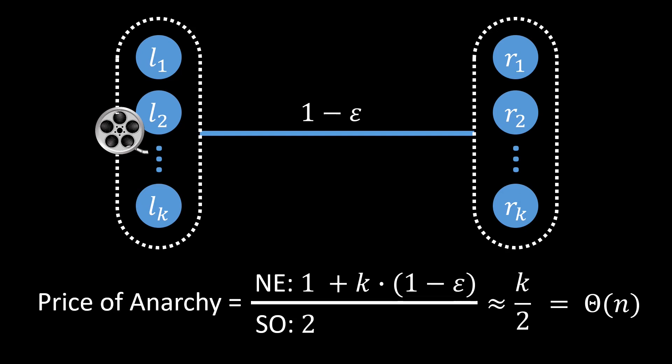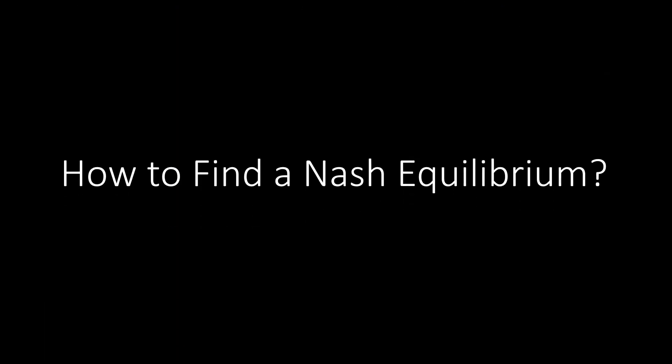In other words, in the selfish caching game it is generally truly useful if a central authority decides which nodes cache the movie. There is one more natural question we want to answer: how easy is it to find a Nash equilibrium? In general, in game theory, finding a Nash equilibrium is known to be difficult — there are examples where computing a Nash equilibrium is practically impossible. But some games allow for a simple construction of a Nash equilibrium, and selfish caching is such a game. We can find a Nash equilibrium with a simple greedy algorithm.